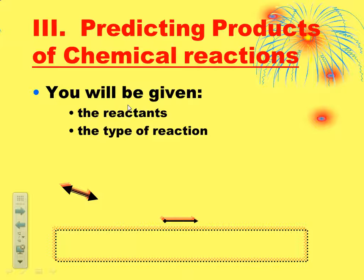First off, you'll need to be told the identity of the reactants. You'll either be given the names of the reactants or their chemical formulas. And then you would be told the type of reaction that it is—if it's a synthesis, decomposition, single replacement, double replacement, or combustion reaction. So you will be told those two things.